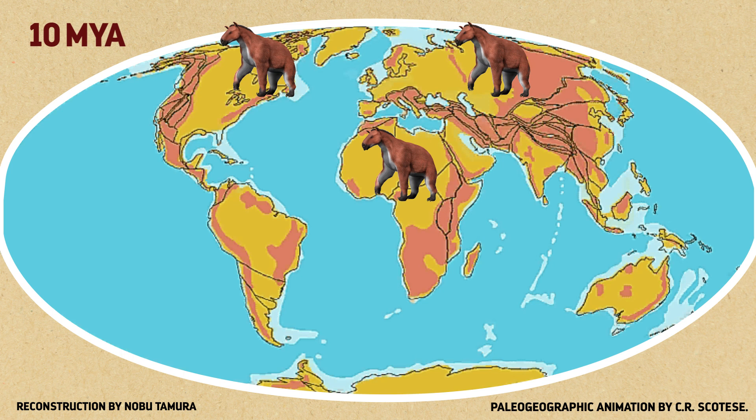Of course, as you know from the lack of them, their success didn't last forever. Despite their specializations, Chalicotheres aren't with us today. The last of both families died out in North America 10 million years ago, and they lingered in Asia and Africa until around one million years ago.